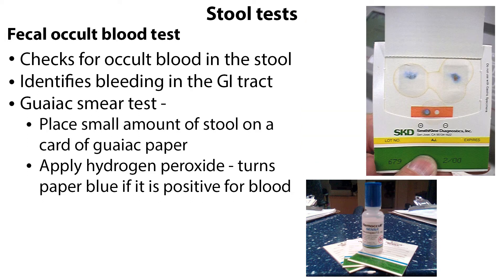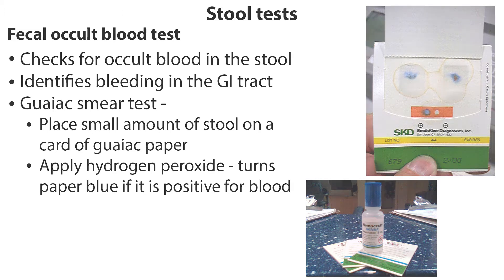The fecal occult blood test checks for occult blood in the stool, which is useful in identifying bleeding in the GI tract. A GUIAC smear test is used, which involves placing a small amount of stool on a card of GUIAC paper and applying hydrogen peroxide, which turns the paper blue if it is positive for blood.